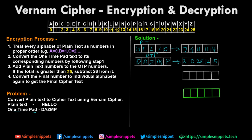Step three: add the plaintext numbers to the OTP numbers and write down the output in an intermediate box. So: 14 + 15 = 29, 11 + 12 = 23, 25 + 11 = 36, 4 + 0 = 4, and 7 + 3 = 10. We have our intermediate output. There's one more step: check if the total is greater than 25 — if so, subtract 26 from it. Since we only have assignments from 0 to 25, we cannot assign a new letter to 36.